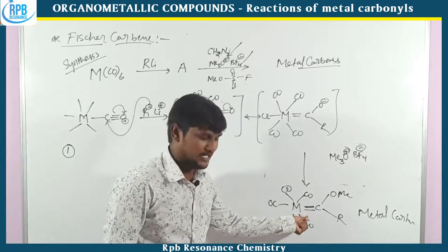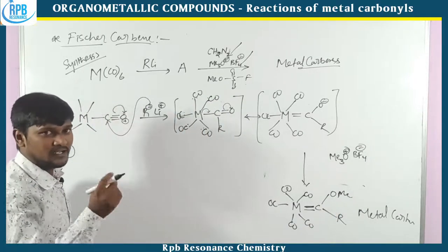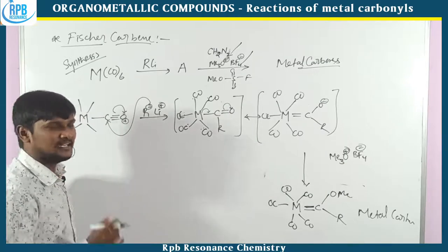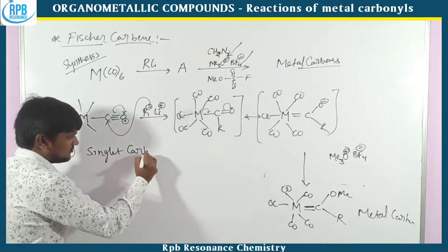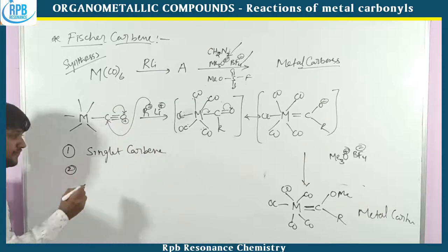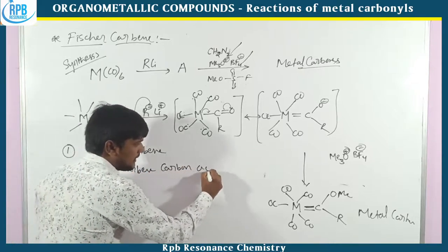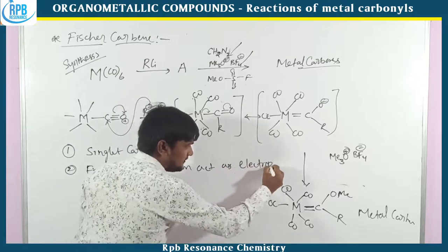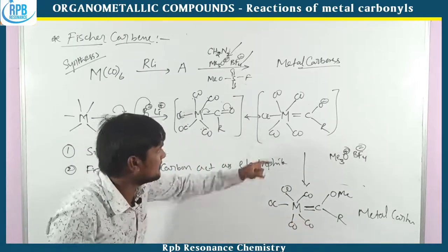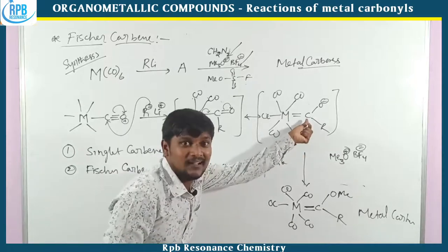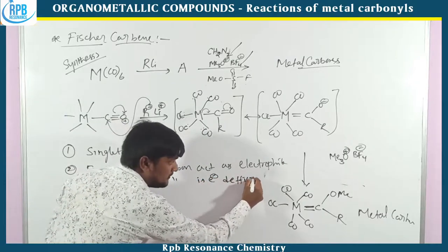Simple thing: in metal carbene, if any carbon atom connected to the metal carbene has a heteroatom, it existed as singlet carbene. This is the first feature of Fischer carbene — it exists as singlet carbene. Fischer carbene carbon acts as an electrophile. Is it real? Yes — electrophile.